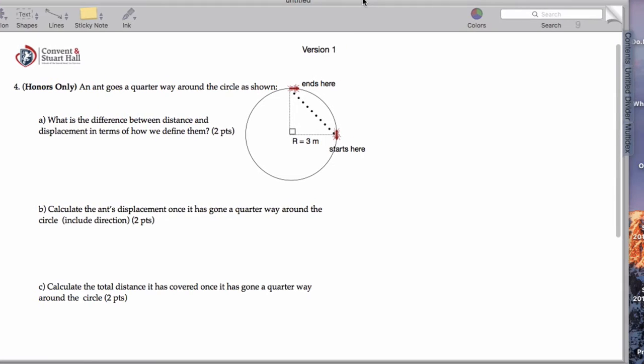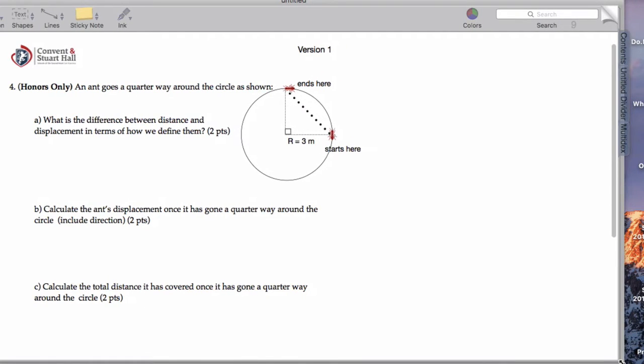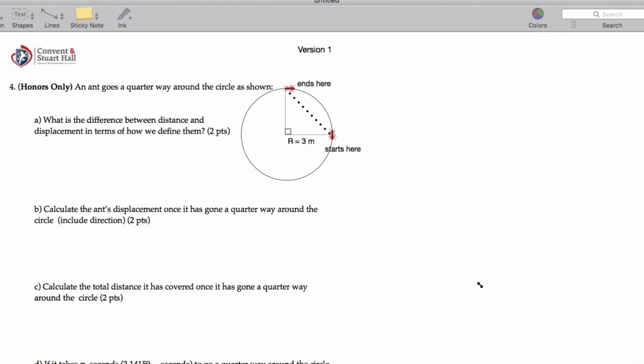This question is for the honors class only, but I want to make sure I cover it. So we want to know the difference between distance and displacement in terms of how we define them. The way I would define these is distance is the total length of the path traveled, and displacement is simply x final minus x initial. It's just a straight line connecting starting and ending point.